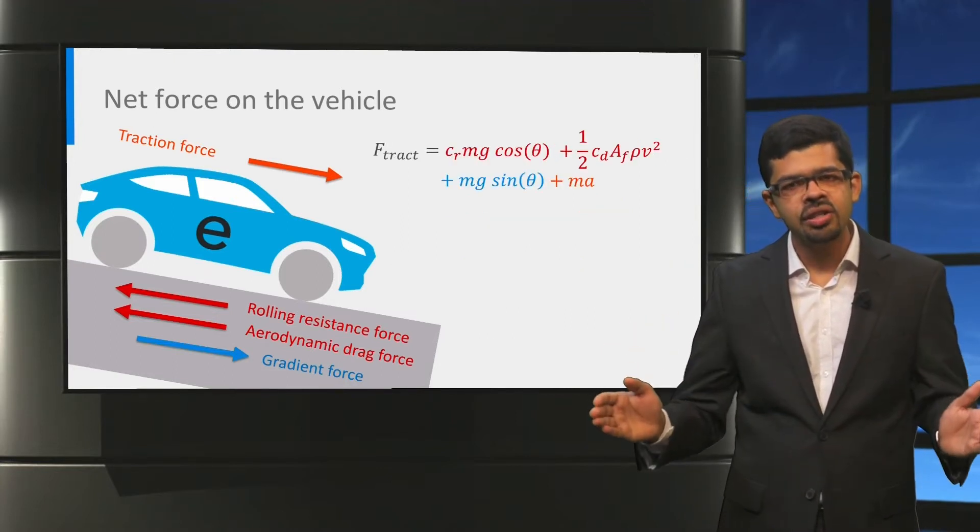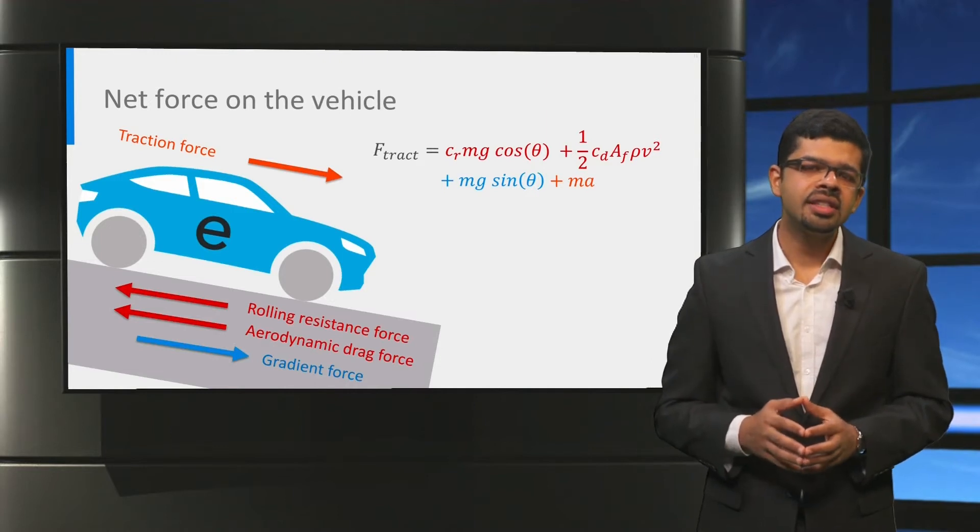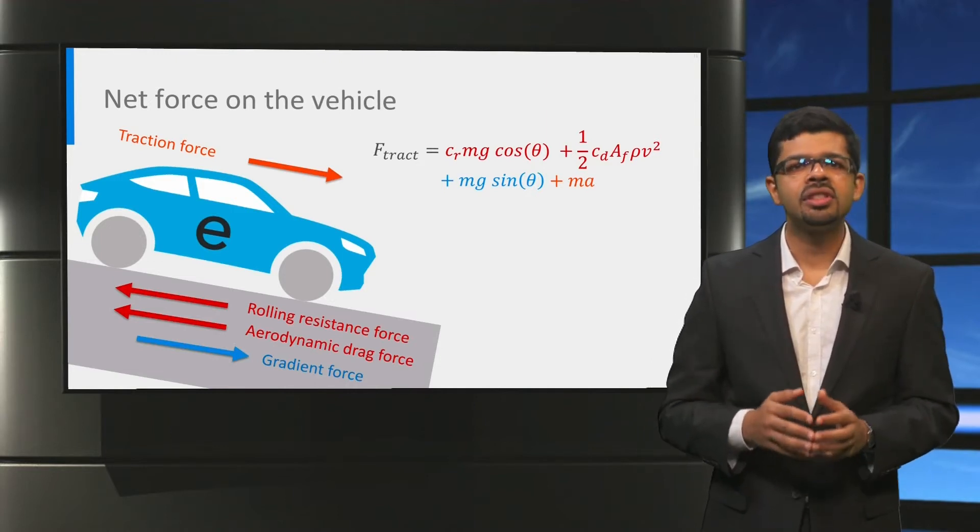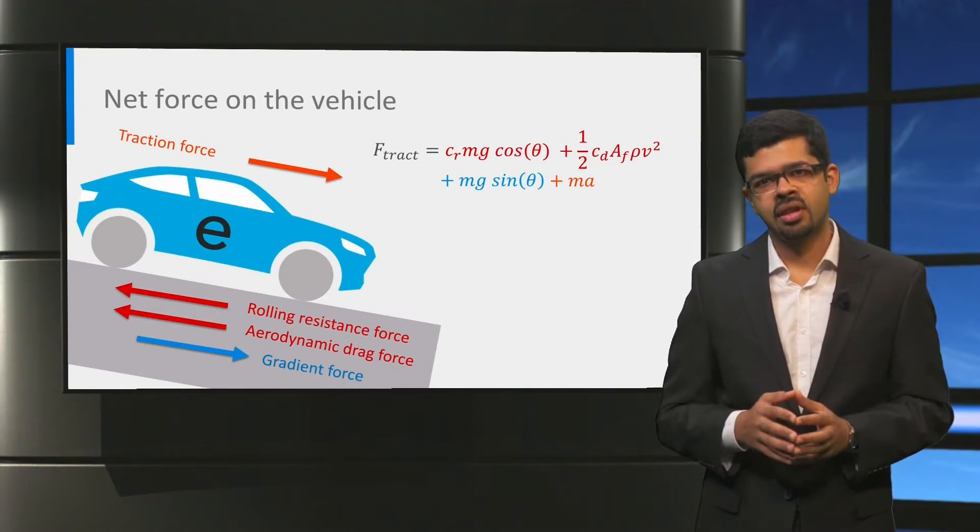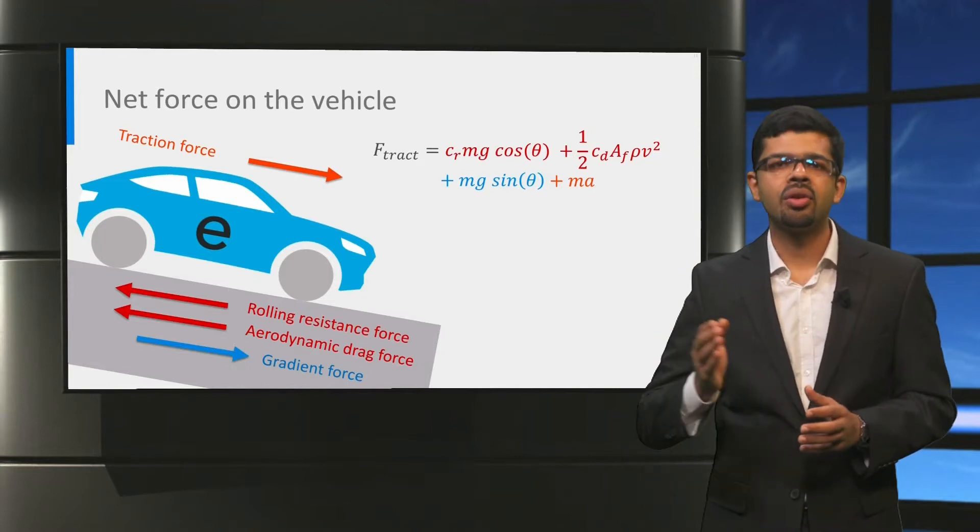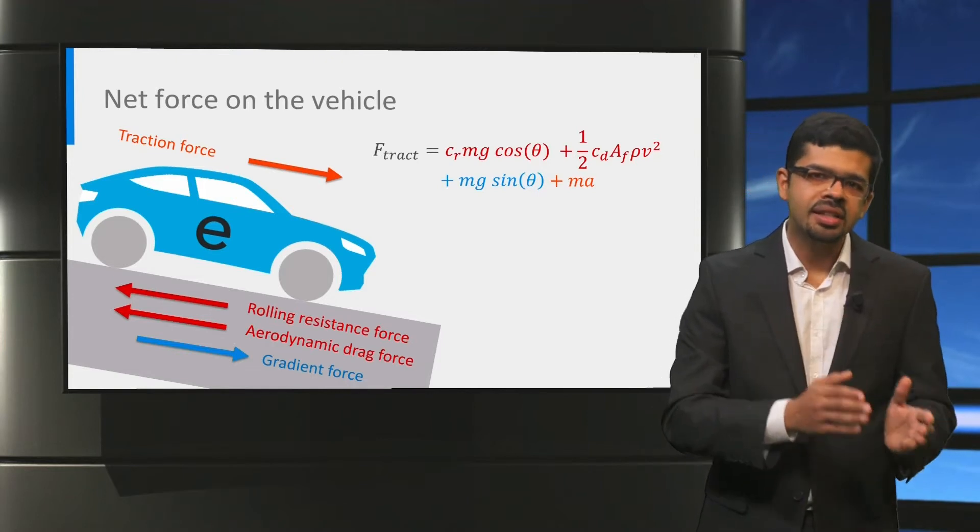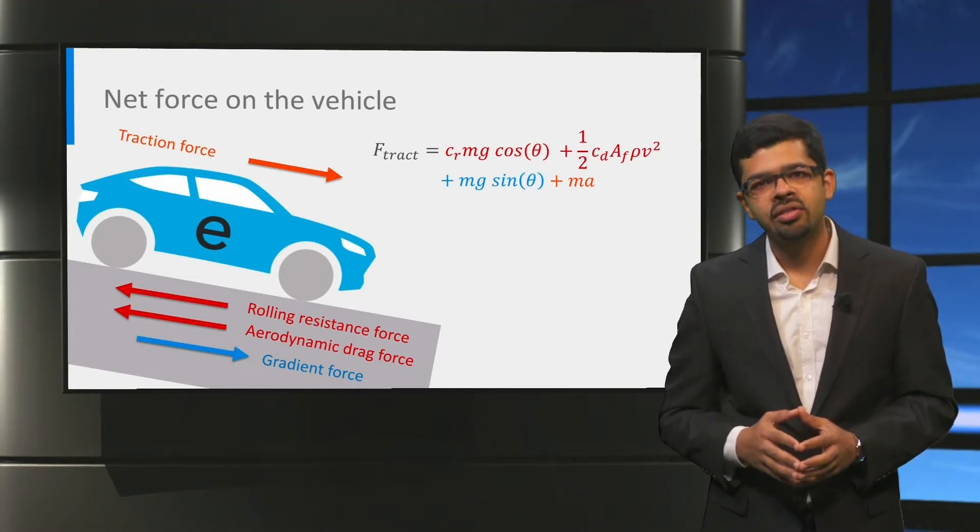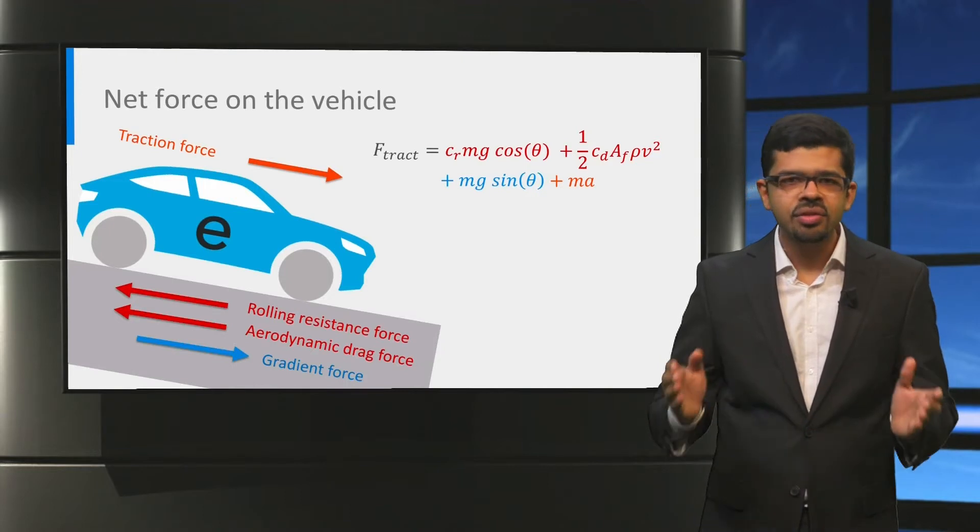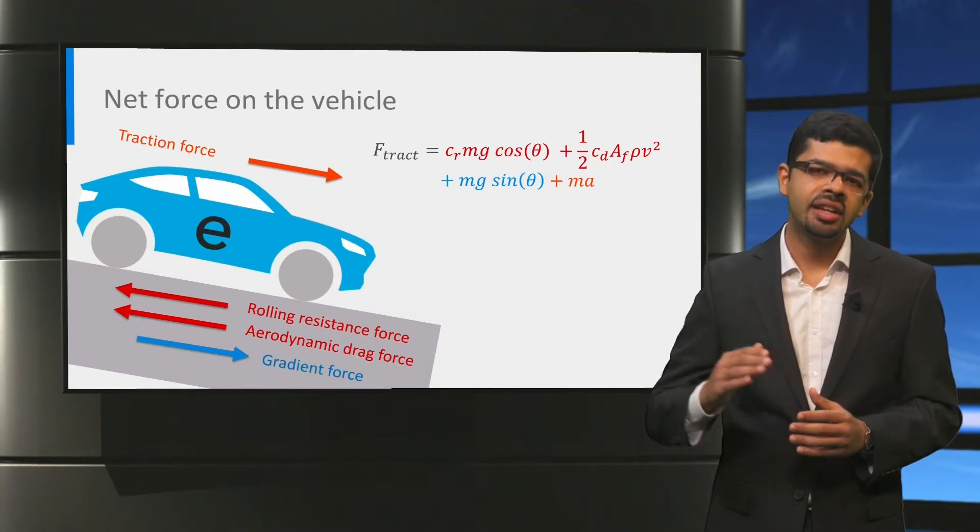If we now expand the equation for the traction force, we can see the factors that influence the vehicle forces. The vehicle mass and the road angle affect the rolling resistance and the gradient force. The vehicle speed determines the aerodynamic drag force. And the rest of the traction force decides the vehicle acceleration.